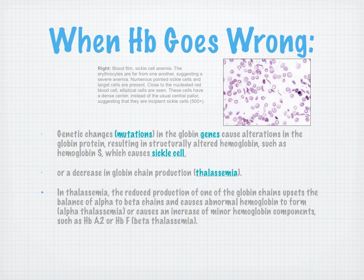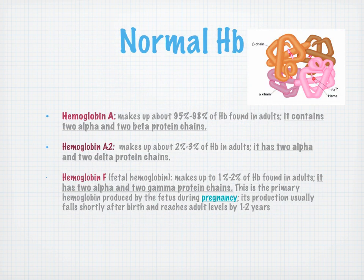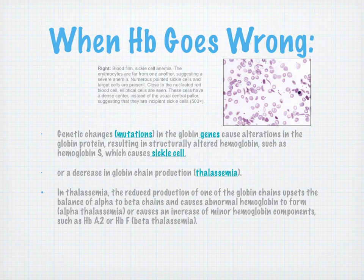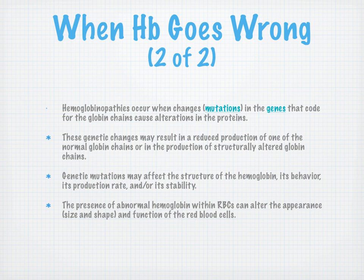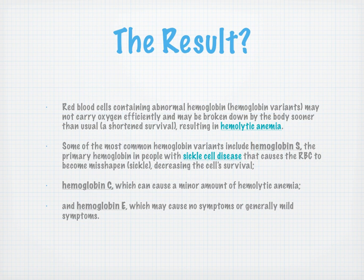Reduced production of one globin chain upsets the alpha-to-beta balance and causes abnormal hemoglobin — that would be alpha thalassemia. Or it causes an increase in minor hemoglobin components like HbA2 or HbF, which are normally only 2 to 3% and 1 to 2%. When that balance gets upset and we have too much of those, that's called beta thalassemia. The presence of abnormal hemoglobin within red blood cells alters appearance, size, shape, and function. Red blood cells with abnormal hemoglobin may not carry oxygen efficiently or may be broken down sooner, resulting in hemolytic anemia.